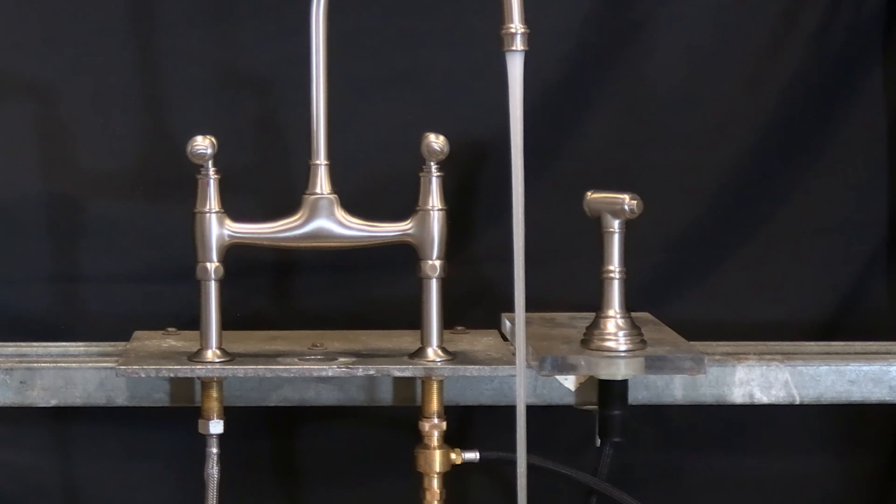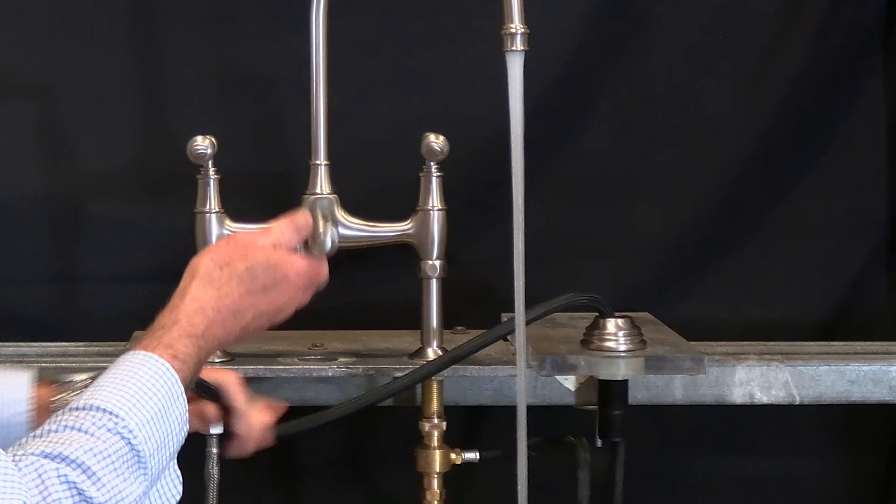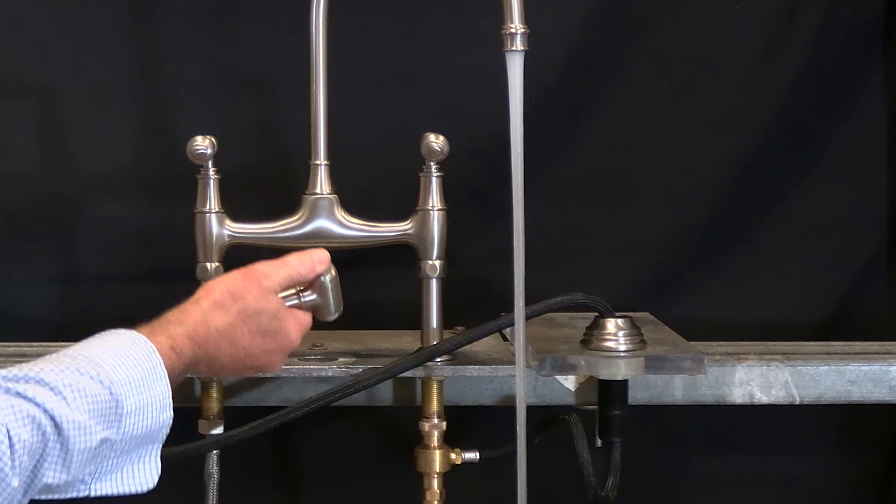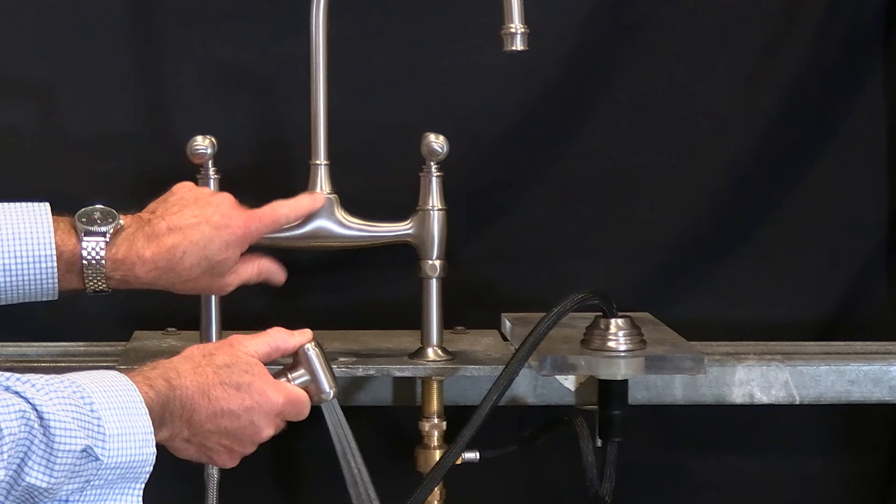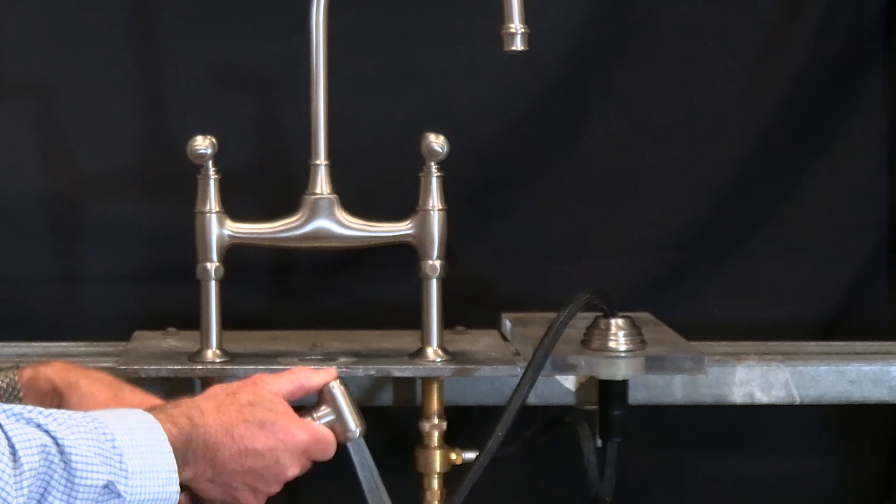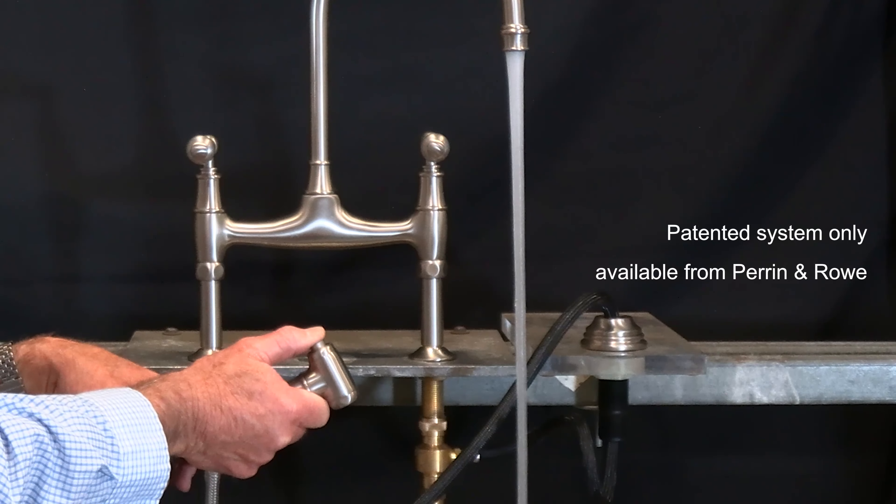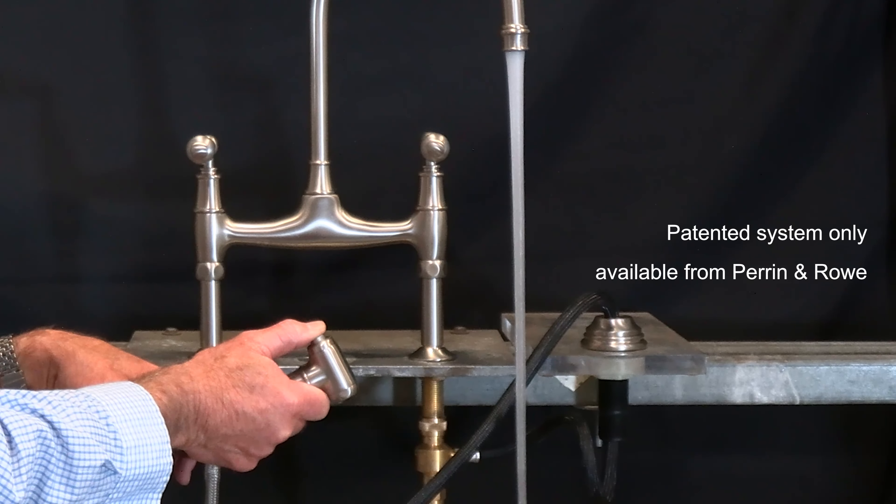Water out of this faucet is approximately 1.8 gallons per minute. The way this works when you hit the button on the hand spray, the diverter inside the bridge activates, prevents the water from coming out of the spout, and all the water goes out of the hand spray. This is a patented system and only from Perrin and Rowe.